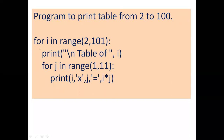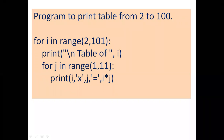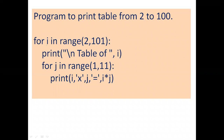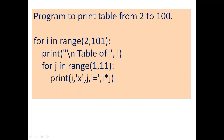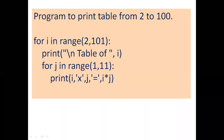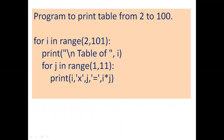A nested for loop is used. For I in range — we have taken the outer for loop from 2 to 101. The ending value is 101, and 101 minus 1 is 100, so I will go from 2 to 100. Here I assign value from 2 to 100.